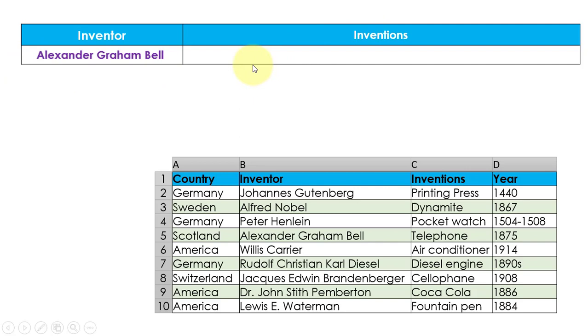Here the name of the inventor is given and what we need to find is the invention done by Alexander Graham Bell. To find that invention we need to apply the VLOOKUP function and pass all four parameters which we discussed earlier.